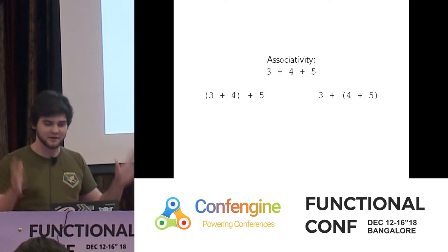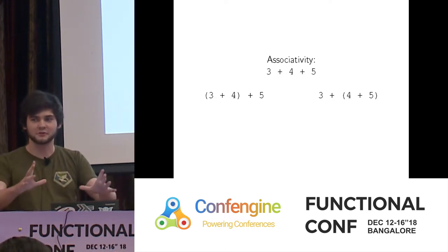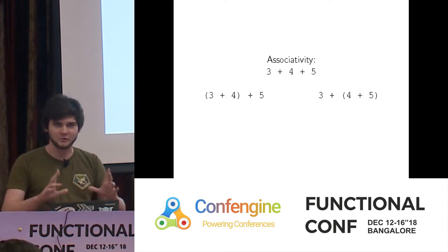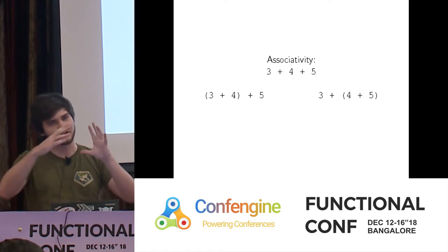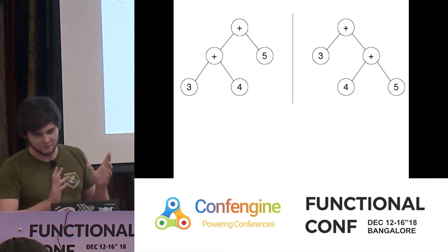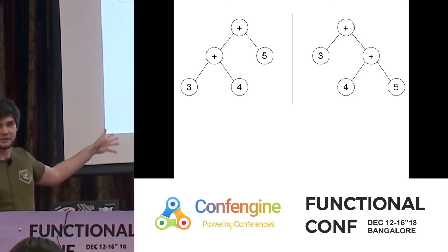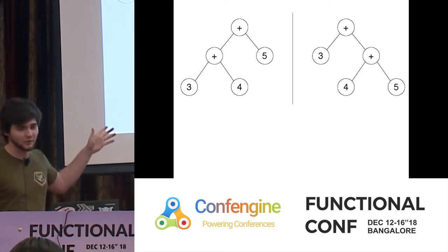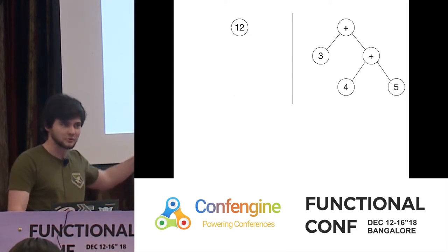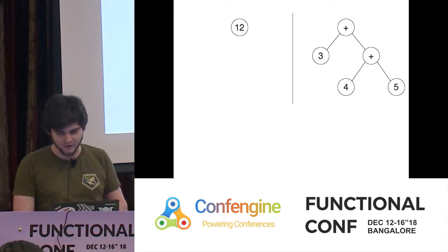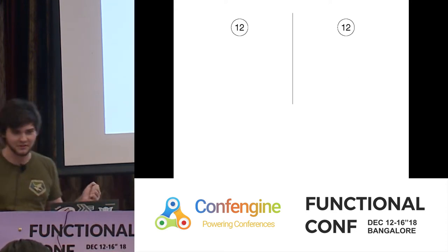Parentheses are a pretty bad way of looking at associativity. What I really want you to think about is trees of computation. Associativity says I can restructure this tree. There are two different ways to evaluate the expression — left-associated or right-associated. If we add three to four we get seven, then add five to get twelve. Or we add four to five to get nine, then add three to get twelve. This is the associative property at work.